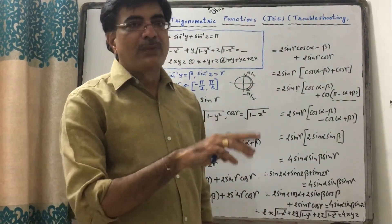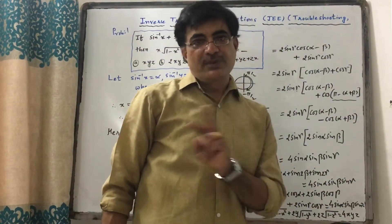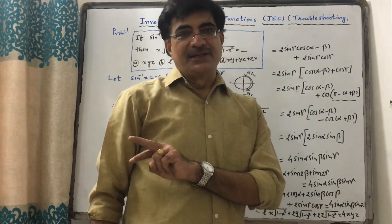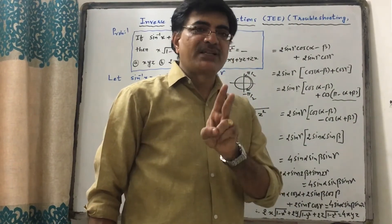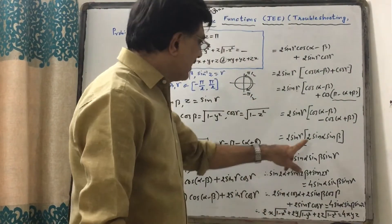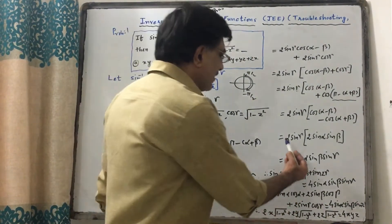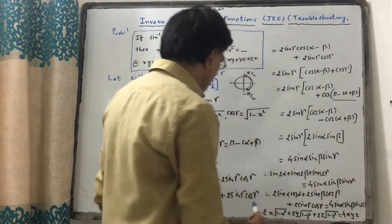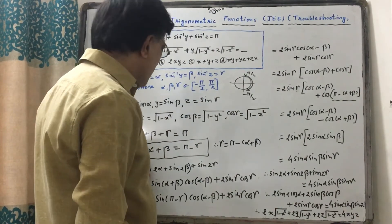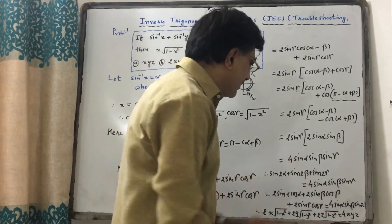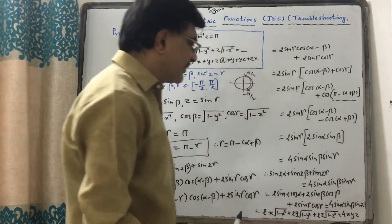Normally we remember: cosC − cosD = −2·sin(...), but here cos(α − β) − cos(α + β), where (α − β) is ahead. So minus of minus becomes plus, giving 2sinα·sinβ. Therefore the full expression becomes 2sinγ · 2sinα·sinβ = 4sinα·sinβ·sinγ. Thus we have proved that sin2α + sin2β + sin2γ = 4sinα·sinβ·sinγ.